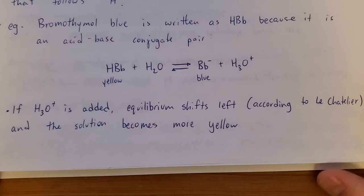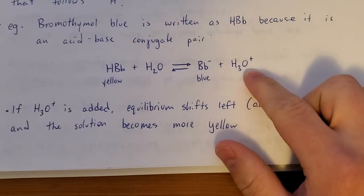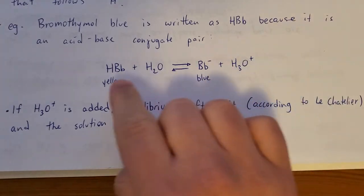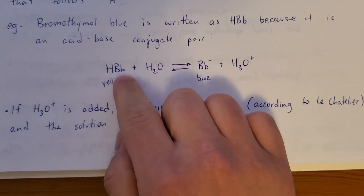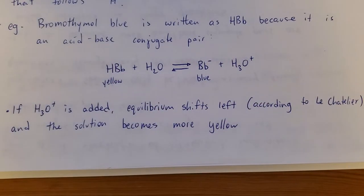Le Chatelier is back a little bit. If you have bromethymol blue in the presence of hydronium, the shift is going to be to the left. It's going to produce more of this stuff, which is yellow. That's why bromethymol blue appears yellow in an acid.